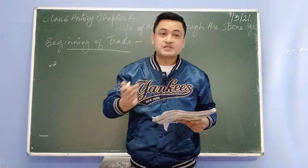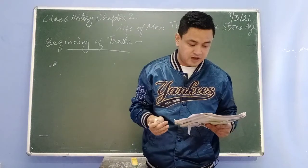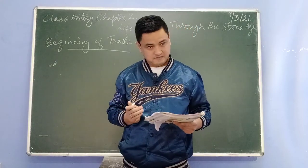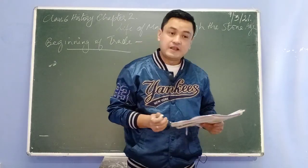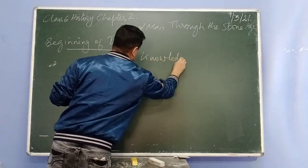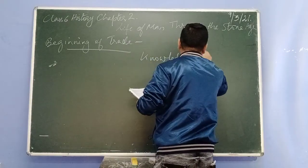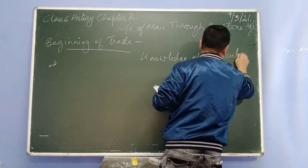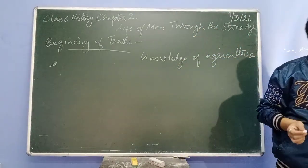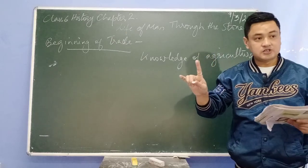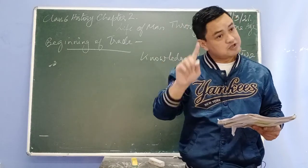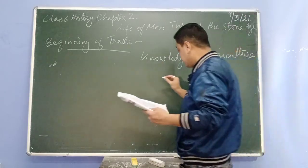These people already knew about how to grow crops, so they had knowledge of agriculture — that is, growing of crops. They also had knowledge of how to keep animals, that is, domestication of animals. These two things — knowledge of agriculture and domestication of animals — are what we have to remember when talking about the beginning of trade.